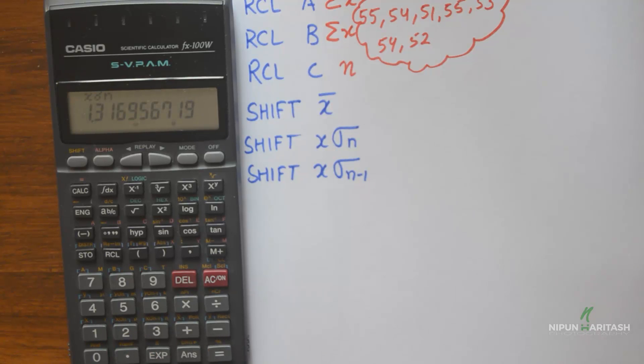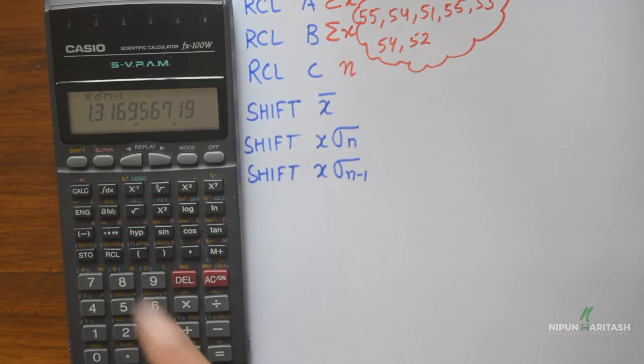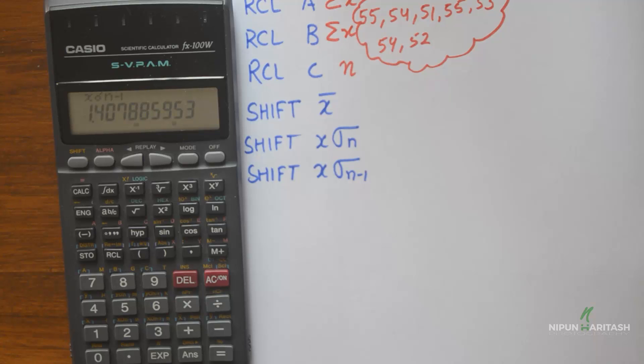I press shift and 2 to find population standard deviation, which is 1.31. Then I press shift and 3, which is sample standard deviation, which turns out to be 1.407.